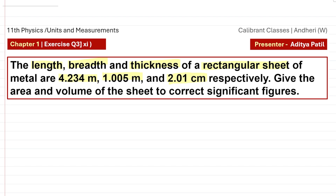Based on these three measurements, we are required to calculate the area and volume of the rectangular sheet. Now you might think this seems like a pretty easy sum, but the twist is to calculate the area and volume in their correct significant figures. This is what makes it a numerical for our Units and Measurements chapter — teen dimensions diye gai hain, length breadth thickness, aur us ke basis pe area aur volume calculate karna hai in their correct significant figures.